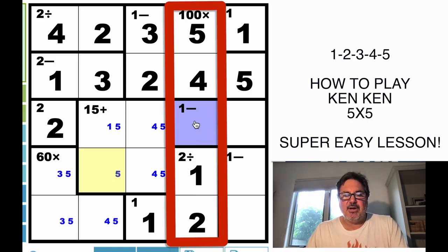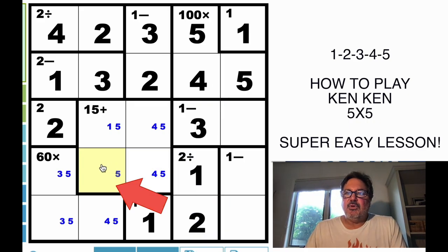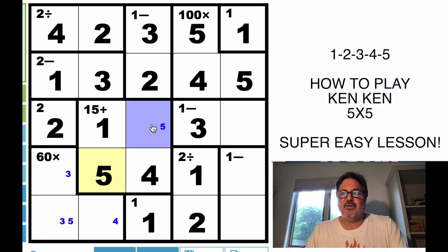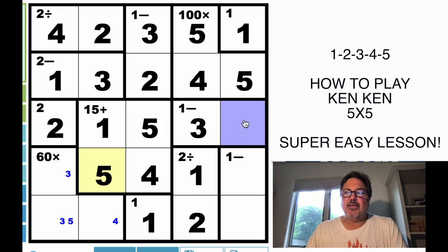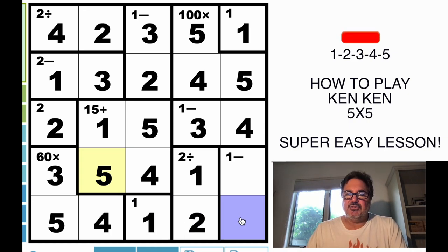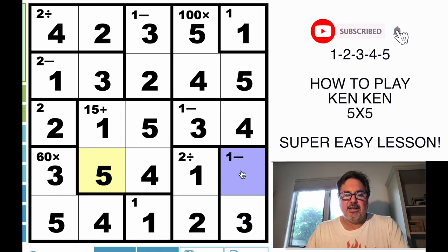And then that allows us to fill in this spot very easily. And by doing that, we've answered this one here. Only a 5 can go there. And we can follow that through. 1, 2, that has to be a 4. And now we can easily solve these bottom ones. That has to be a 3. That has to be a 2.